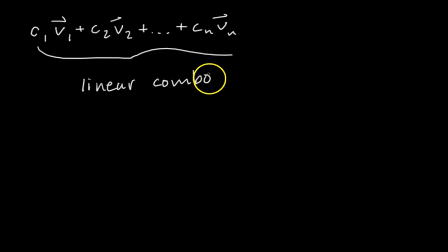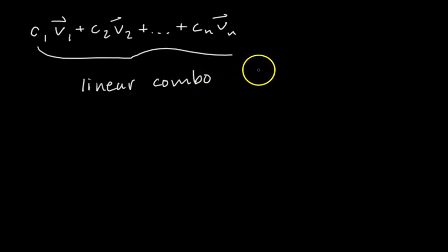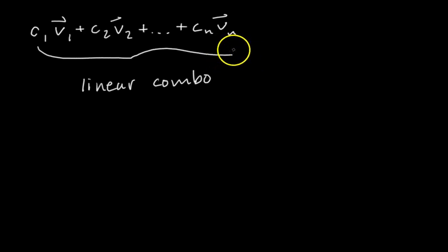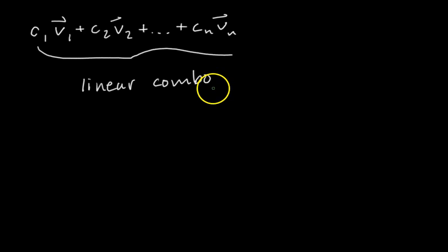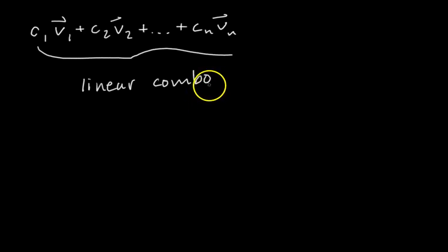In this video, we're going to talk about the span of a set of vectors. The span, in simple terms, is the collection of all the possible linear combinations you can make. First, let's consider what if we just want to find the span of one vector?